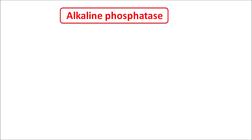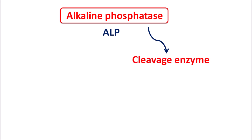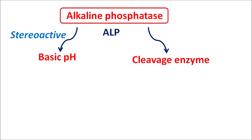What is this enzyme alkaline phosphatase? This enzyme, abbreviated as ALP, is one of the important enzymes for the diagnosis of clinical disorders. The suffix 'phosphatase' indicates that this is a cleavage enzyme. Alkaline phosphatase is responsible for cleavage of phosphate bonds, and the prefix 'alkaline' indicates that this enzyme is active in basic pH — so in alkaline pH only, this enzyme is active.